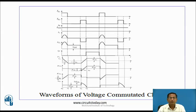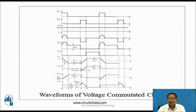These are the waveforms of the voltage commutated chopper. These are the waveforms for the gate pulse of main T1 and the gate pulse for the auxiliary thyristor. These are the waveforms for the load current, the charging and discharging current, IT1, the freewheeling diode current, the voltage across the capacitor, the auxiliary thyristor current, the voltage across the auxiliary thyristor, and the load voltage.